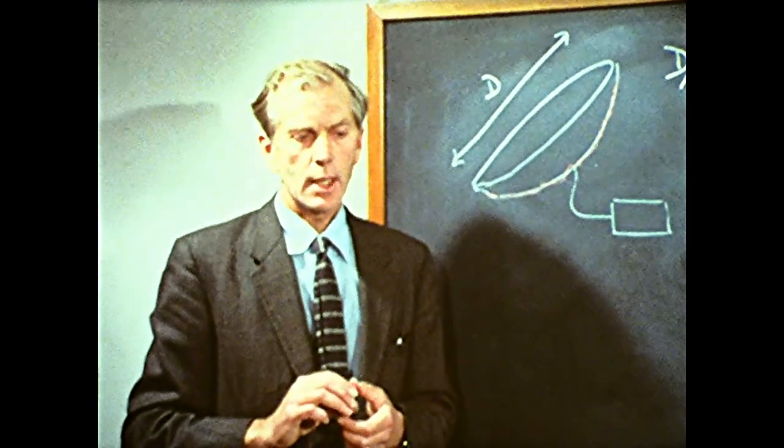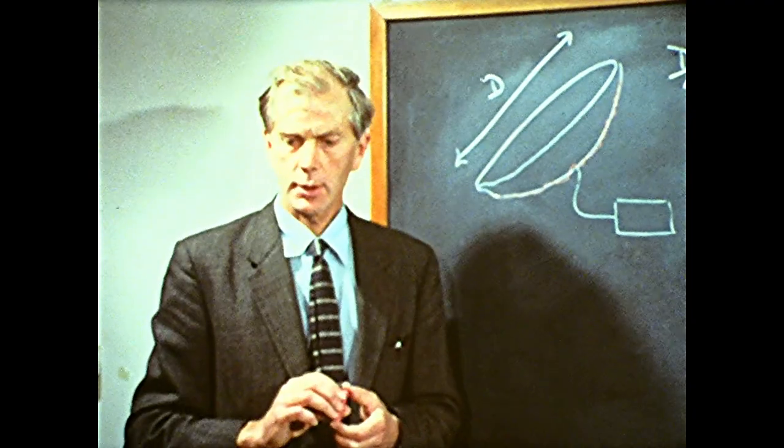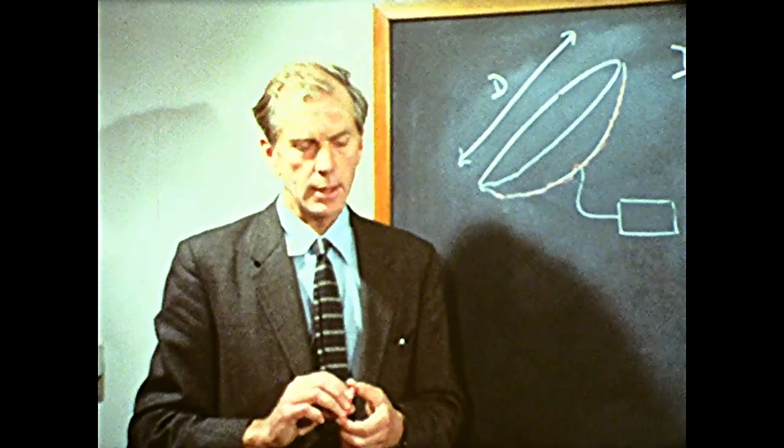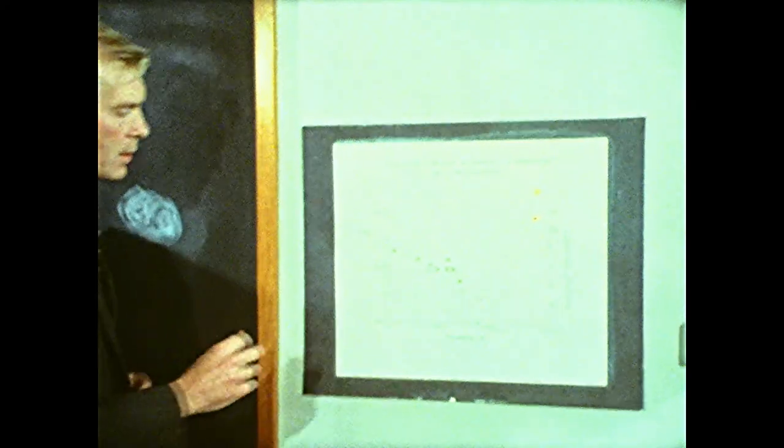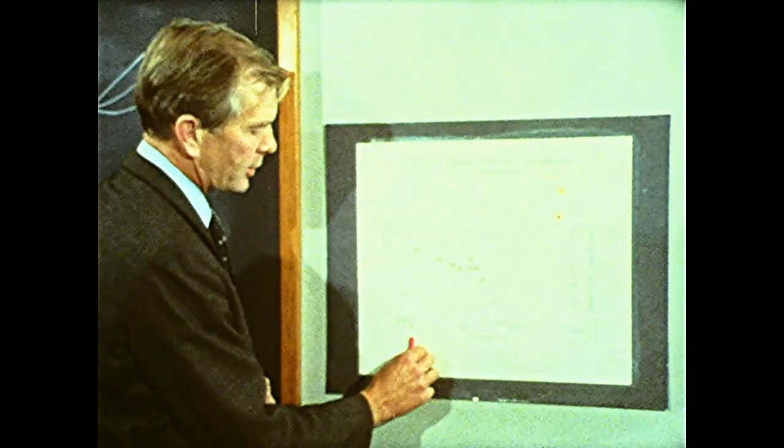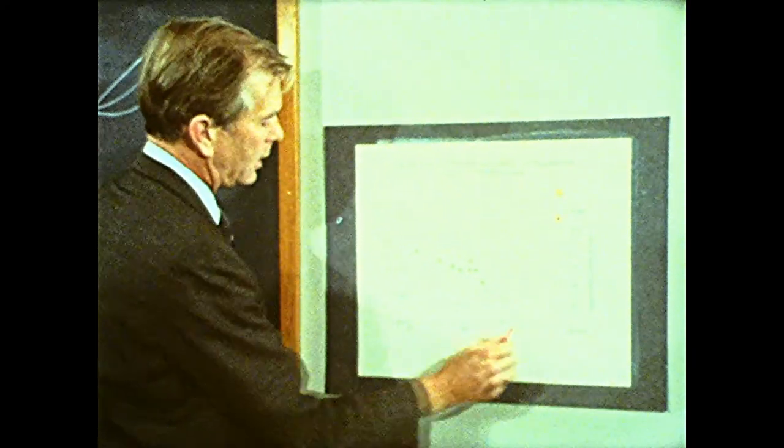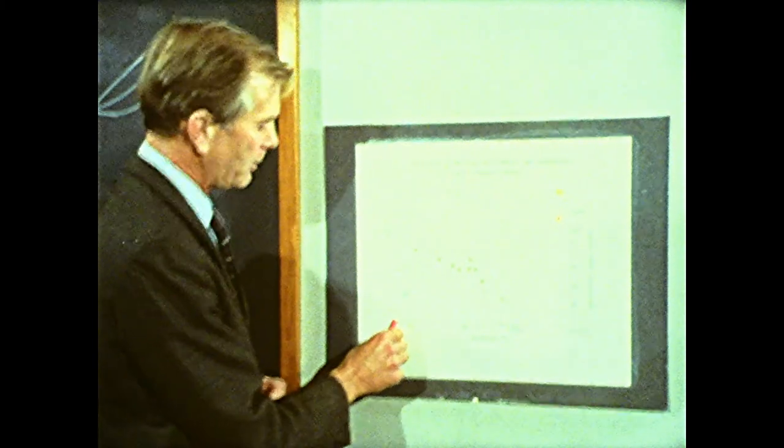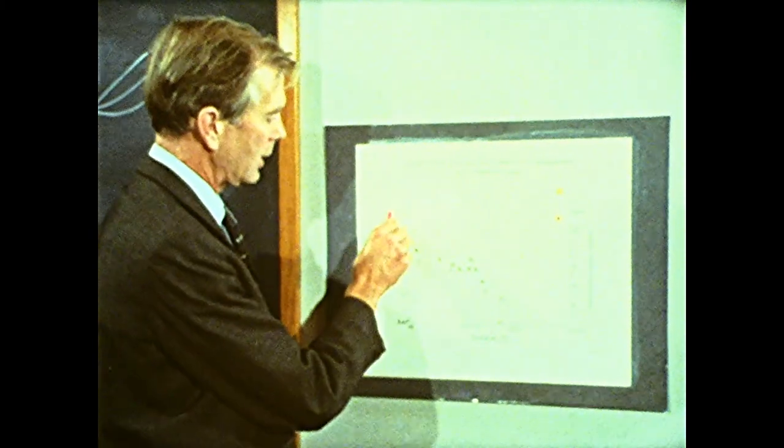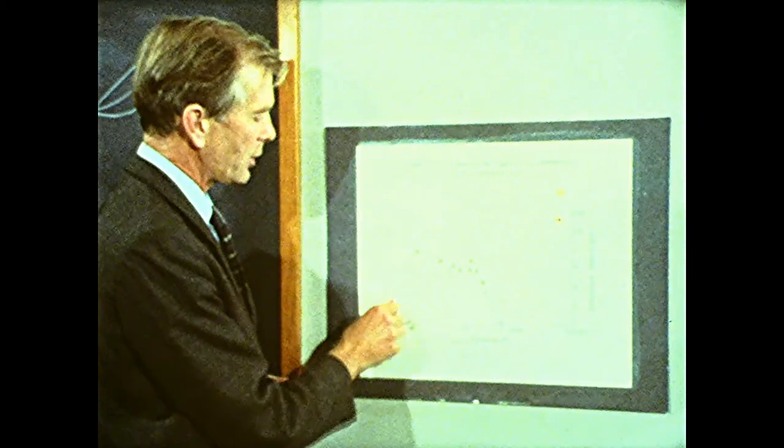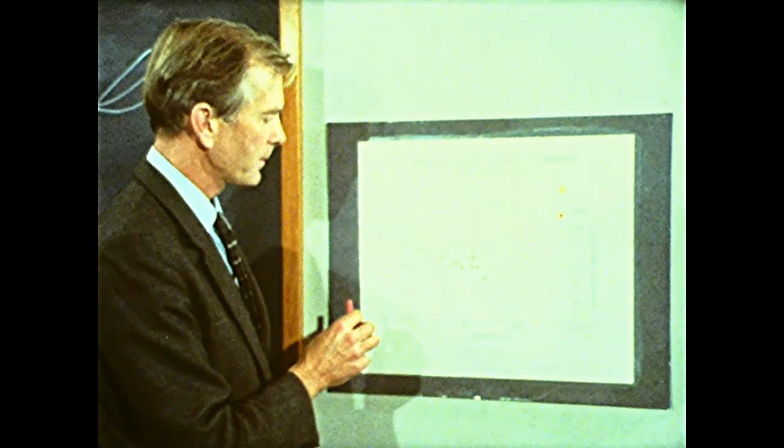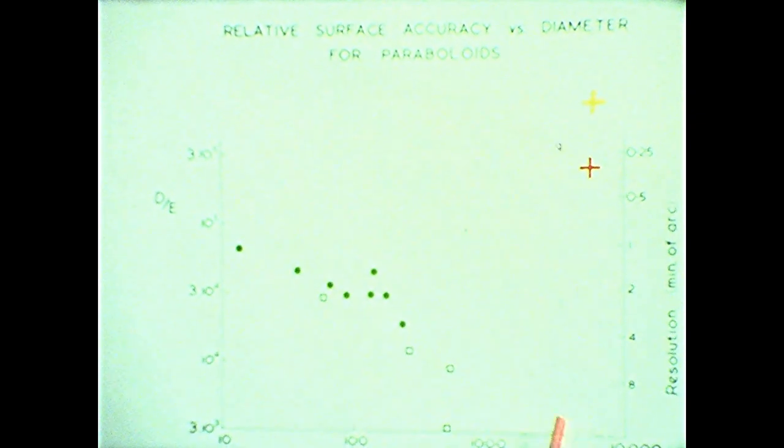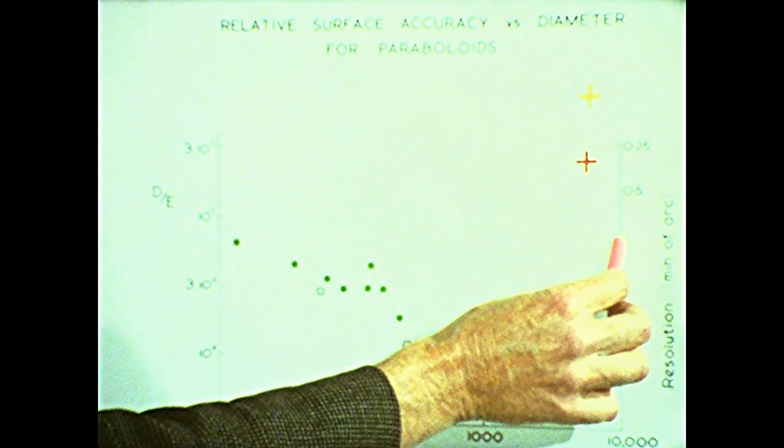And this has turned out to be an extremely difficult problem, as can be seen from this diagram here. This represents the diameter of the dish along here, and up here we have the ratio between the diameter of the dish and the surface accuracy. So this scale gives us a measure of the best resolution we can get with a given instrument. This is also shown on the scale here, represented in minutes of arc.